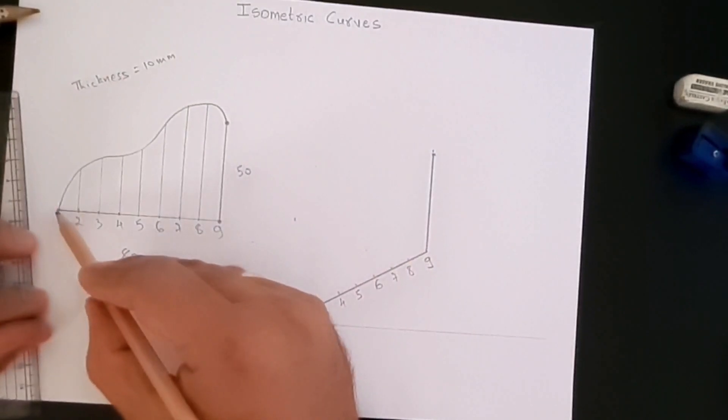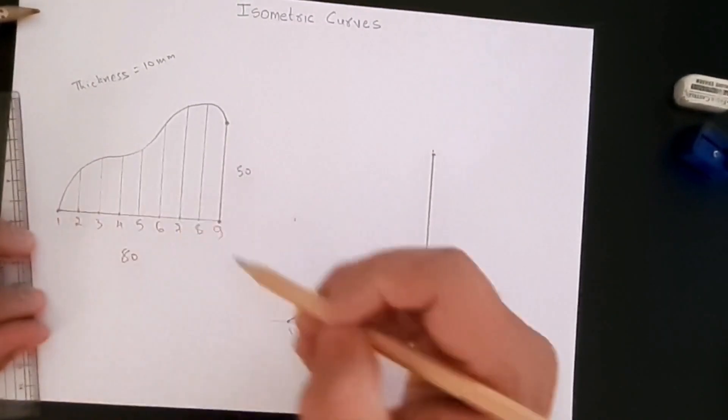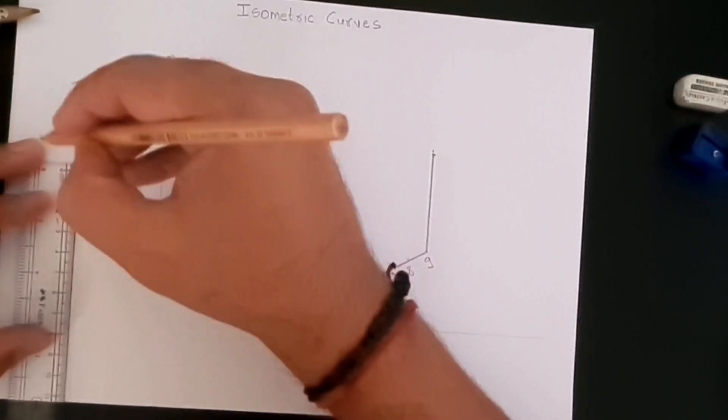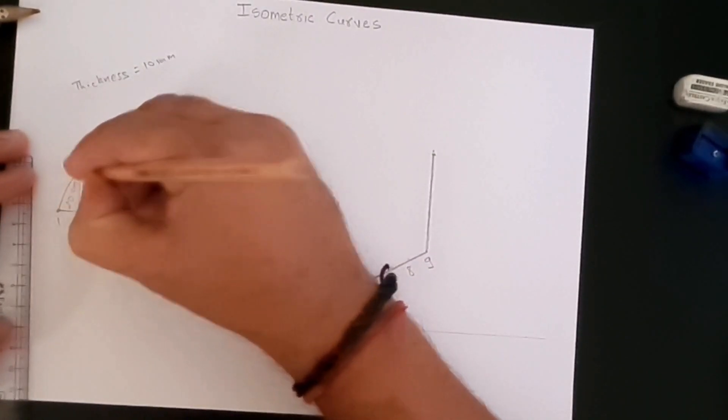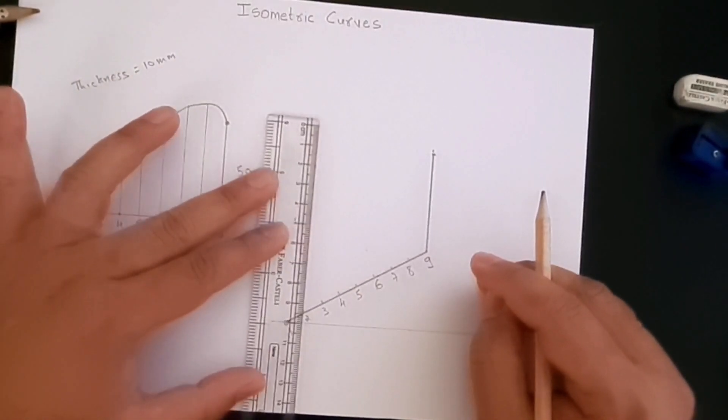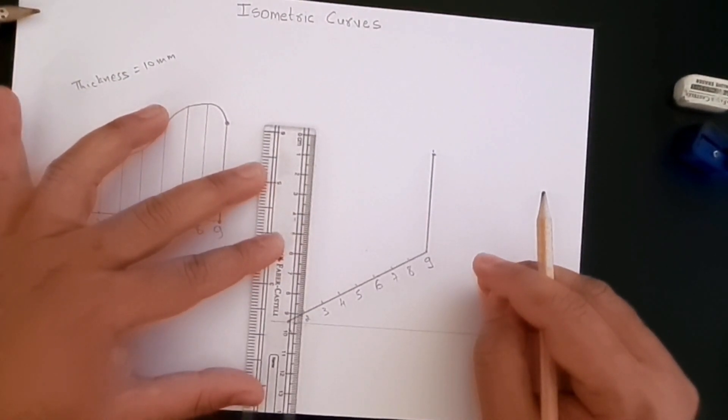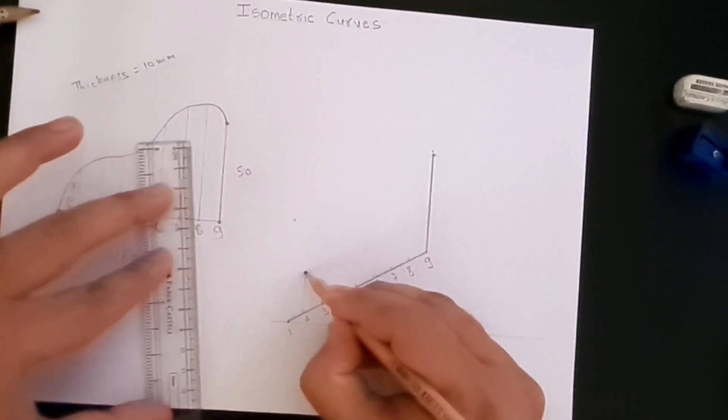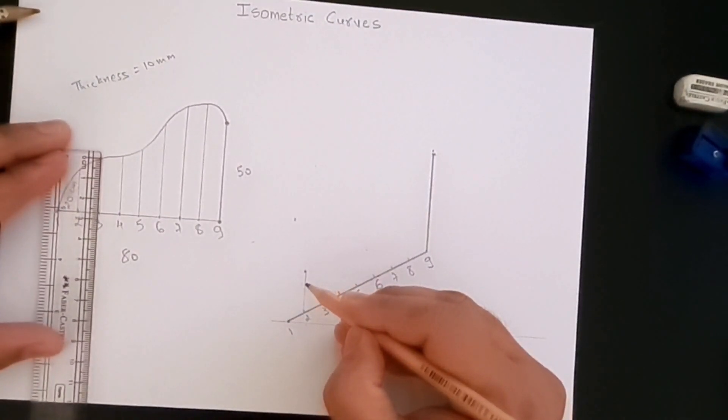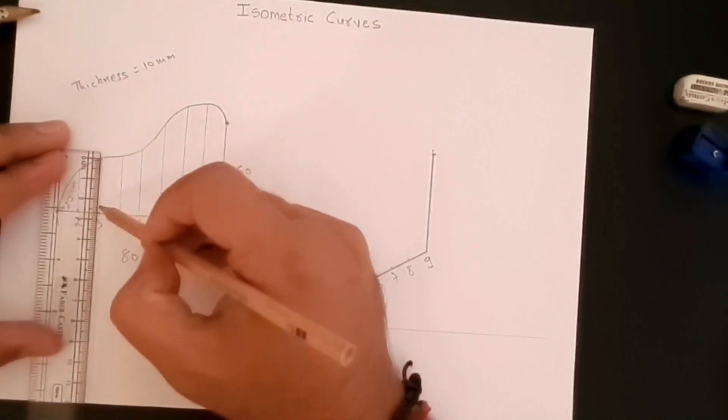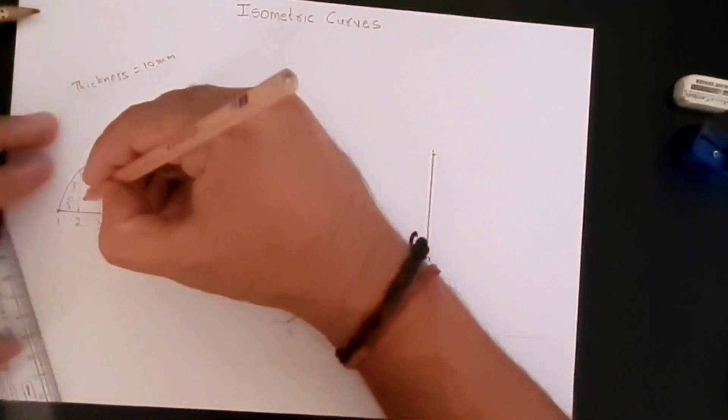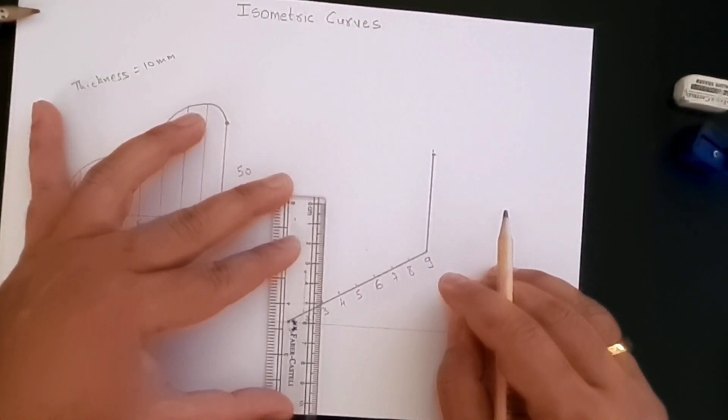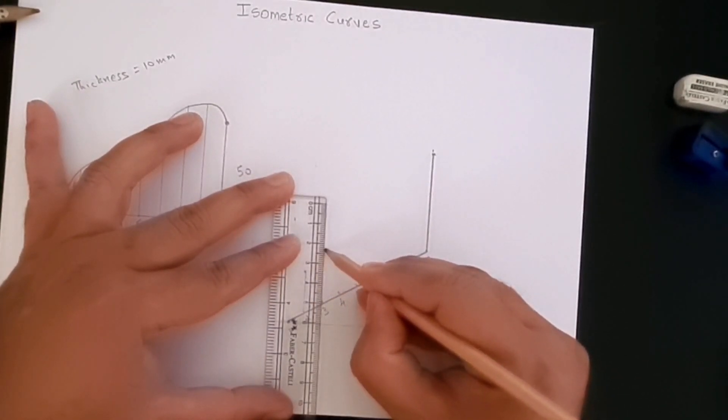Point number one is where both the curve and the line are joining. For point number two, the height of this line is 20 millimeters. Let's create a line which is 20 millimeters from this point, which is here. For point number three, the height that we have is 27 millimeters. So let's create from point three a height of 27: 10, 20, 25, and 27.